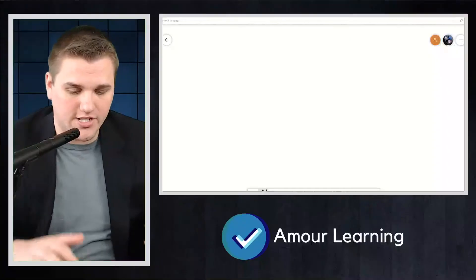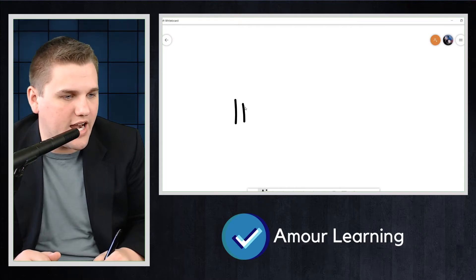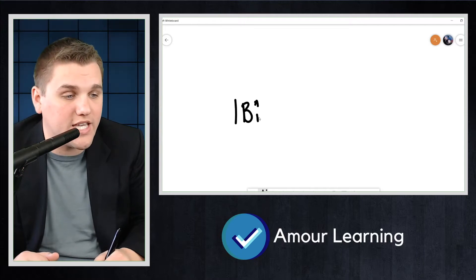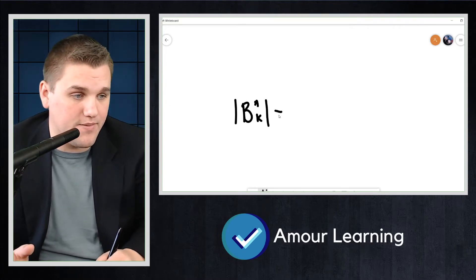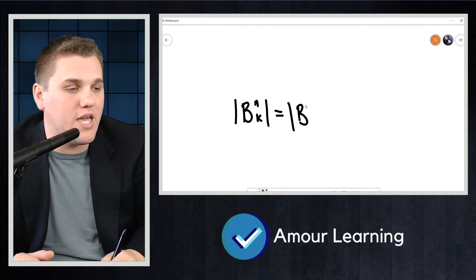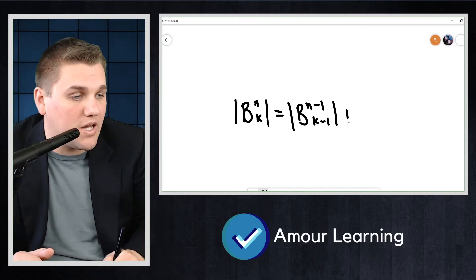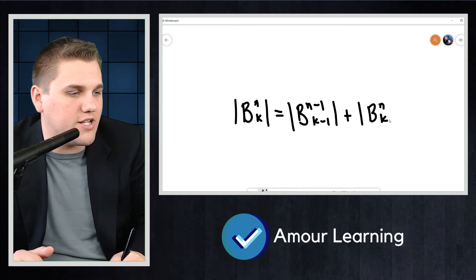If you recall from a previous lecture, we discussed a certain recurrence relation with bit strings, namely that the size of the set containing all of the bit strings of length n with weight k can be thought of in terms of two smaller sets, or at least the size of those two smaller sets, namely the size of B(n-1, k-1) plus the cardinality of B(n-1, k).